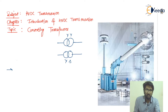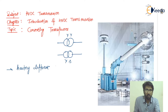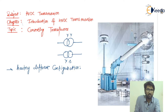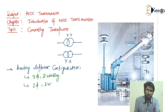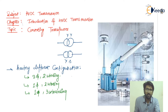The converting transformer has different configurations. The main configurations are: first, three-phase two-winding; second, single-phase two-winding; and third, single-phase three-winding. These are the main configurations which are adopted for the converting transformer.